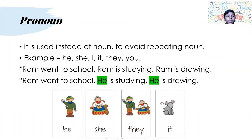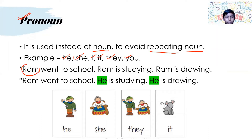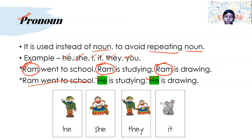Pronoun. It is used instead of a noun to avoid repeating a noun. Examples: he, she, I, it, they, you. For example, instead of 'Ram went to school. Ram is studying. Ram is drawing,' we could introduce Ram once and then say: 'Ram went to school. He is studying. And he is drawing.'